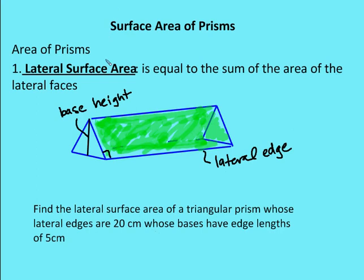Now let's talk about lateral surface area of prisms. Lateral surface area corresponds to the lateral face area — not the base area — and it equals the sum of the areas of the lateral faces. I have a lateral face in green, and for this triangular prism I find the area of three rectangles. The lateral edge is 20 centimeters and the base edge is 5 centimeters, so one face is 20 × 5 = 100 square centimeters. With three congruent faces, the lateral surface area is 3 × 20 × 5 = 300 square centimeters.